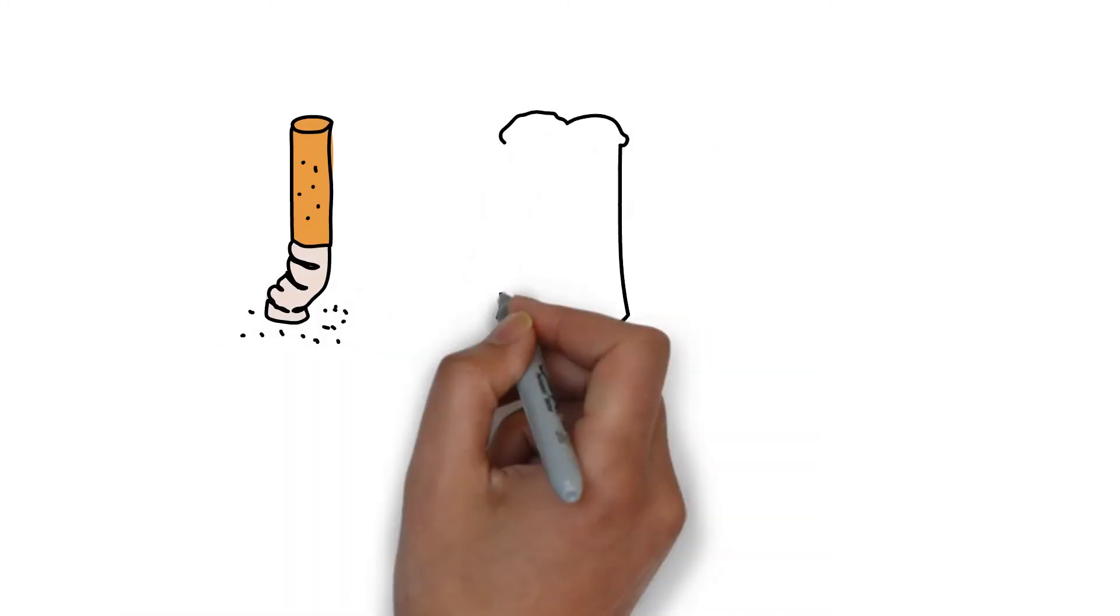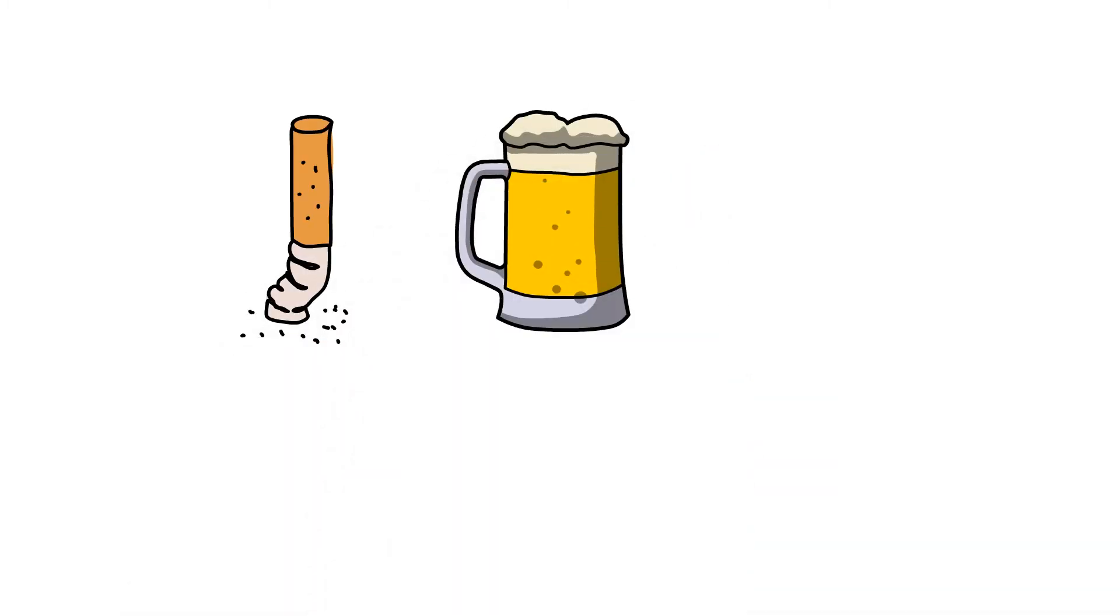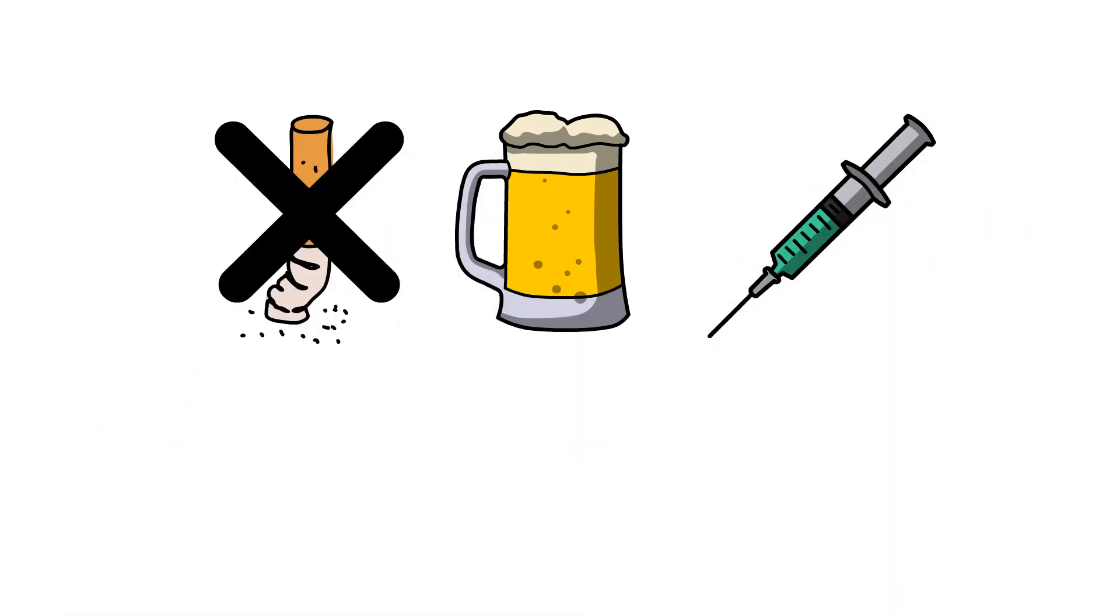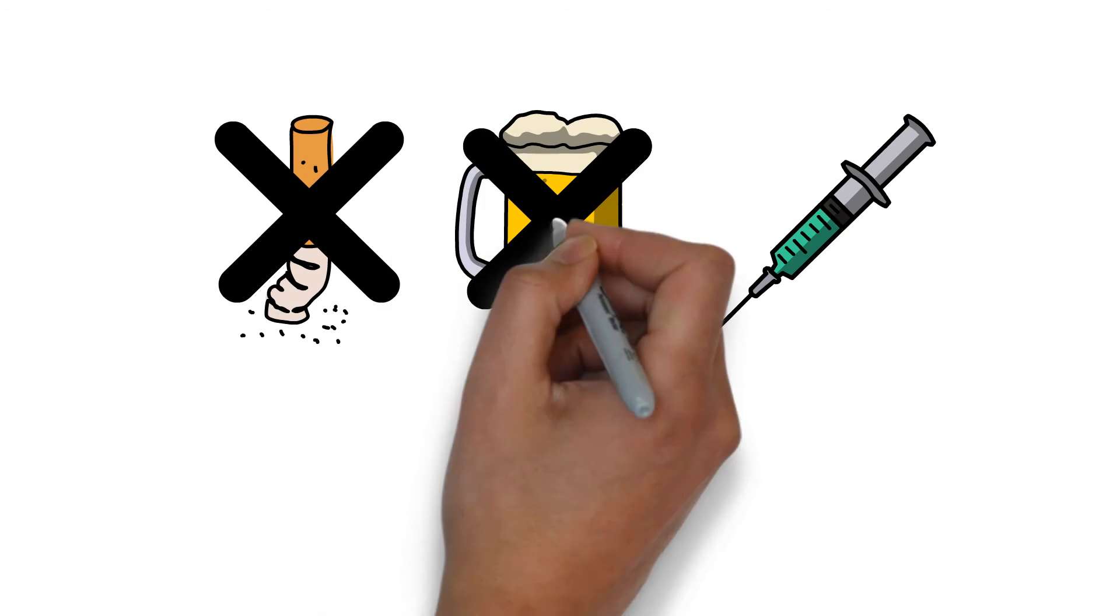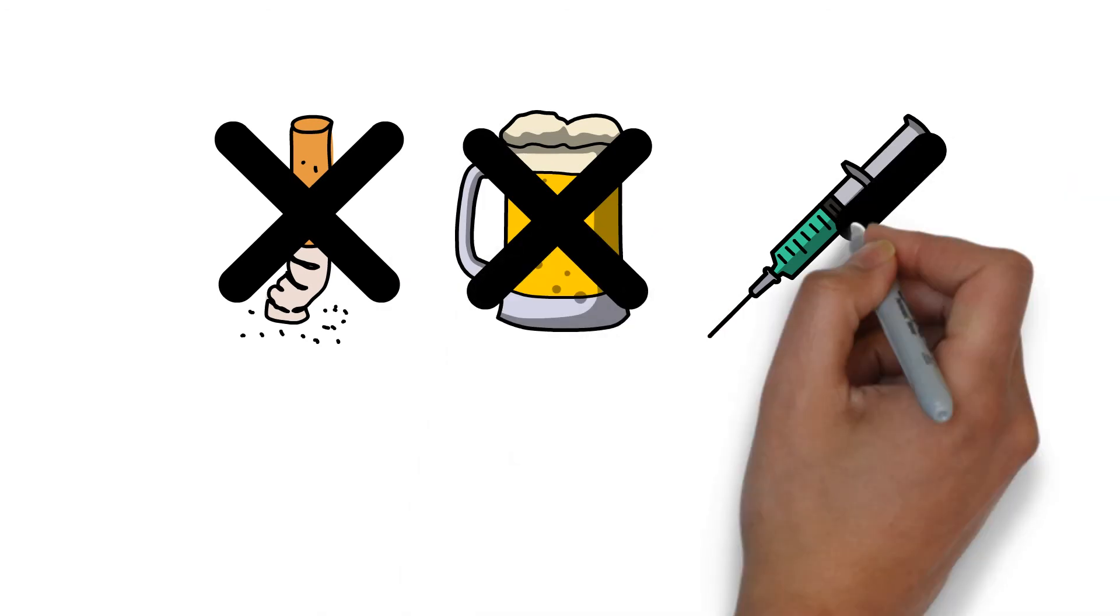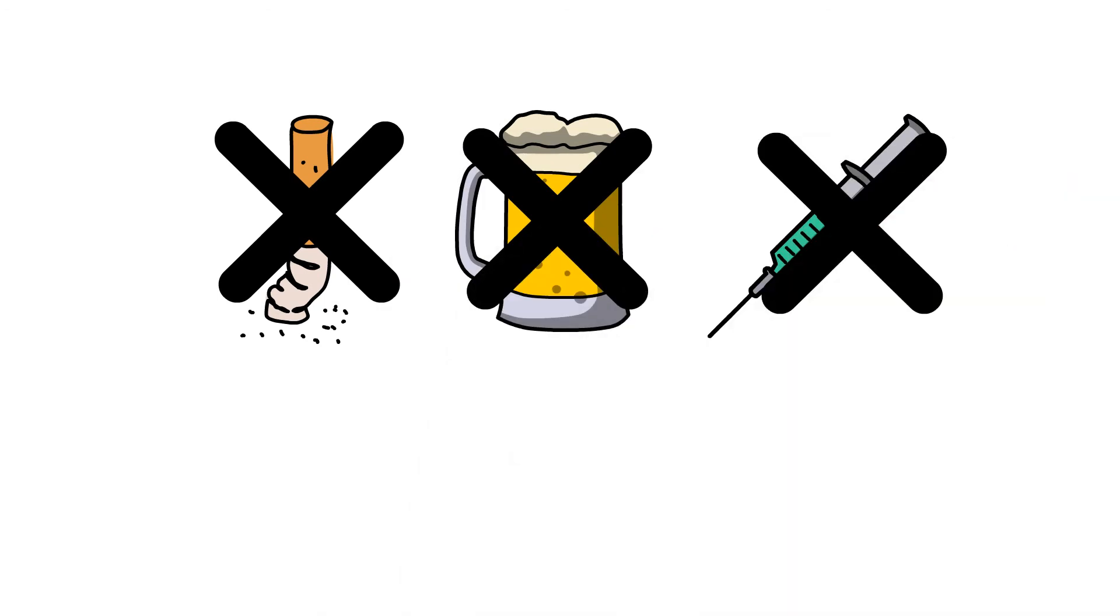Last but not least, people should try their best to stay away from certain drugs or chemicals which are from bad habits such as smoking and drinking. Nicotine, alcohol, or certain drugs can quickly enhance the level of dopamine and make the brain be less sensitive to its change.